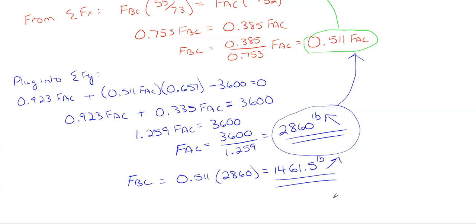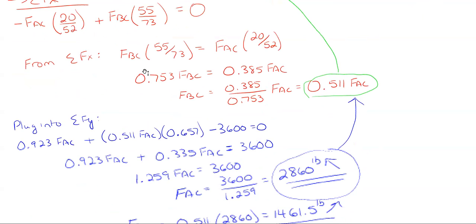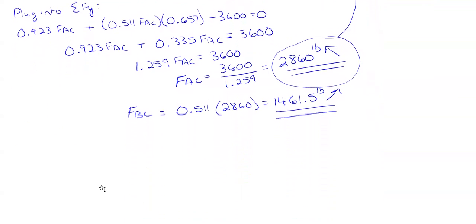Now, with equilibrium problems, you should check your answers. Take the values for FAC and FBC and plug them back into your equilibrium equations to verify they equal zero. This isn't a fail-safe — you could have made an error at the very beginning — but it confirms that the math throughout was done correctly.